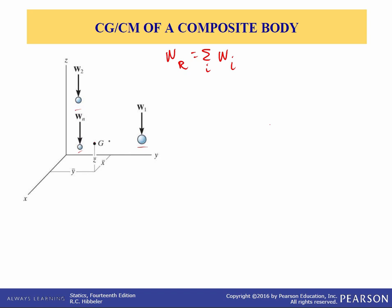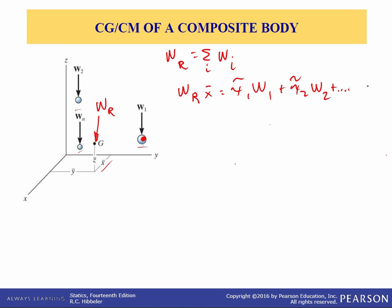This is very similar to what we did in chapter 9.1. Summing moments about the y-axis means that the resultant weight times the distance from the x-axis, which is x-bar, must equal x-tilde 1 times weight 1 — where x-tilde 1 is the distance from the y-axis to that particle — plus x-tilde 2 times weight 2, plus dot dot dot x-tilde sub n times weight sub n. Likewise, we can do the same thing about the x-axis to find the coordinates y-bar and z-bar.